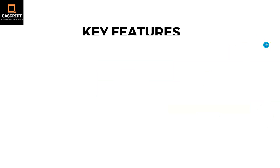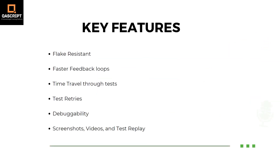Coming to the key features present in Cypress, one of the key features is the flake resistant feature. Using this feature, Cypress can automatically wait for elements to become visible or to become enabled. This way you don't need to wait for elements to exist, or deal with stale elements or elements which have been detached from the DOM. These are common problems with other test automation tools, but with Cypress you will not face this issue.